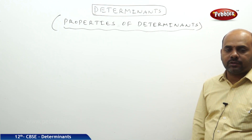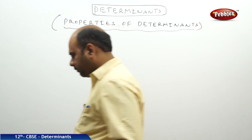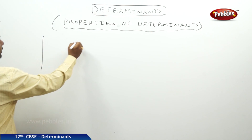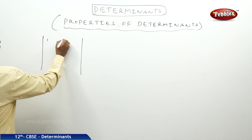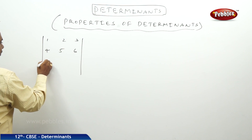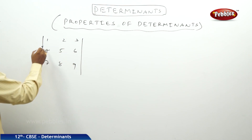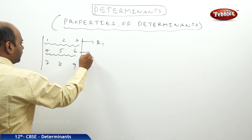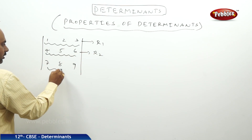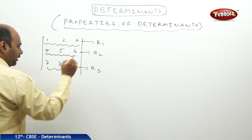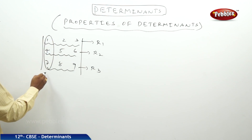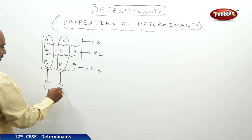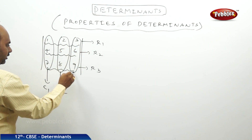Now we shall learn about the properties of determinants. Before starting, I would like to explain the physical shape of the determinant. Considering only a 3×3 determinant with elements 1,2,3 / 4,5,6 / 7,8,9: the first row is denoted R1, the second row R2, and the third row R3. The first column is C1, the second C2, and the third column is C3.